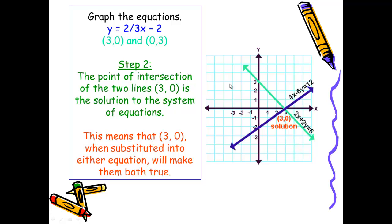For y equals two-thirds x minus 2, the y-intercept is negative 2 with a slope of rise 2, run 3 — generating this dark blue line. For the second equation, the y-intercept is (0, 3) and x-intercept is (3, 0), producing this dark teal line. My second step is to find the point of intersection, and these two lines intersect at the point (3, 0). Since (3, 0) is the point of intersection, it is the solution. This means substituting (3, 0) into either equation would make both of them true.